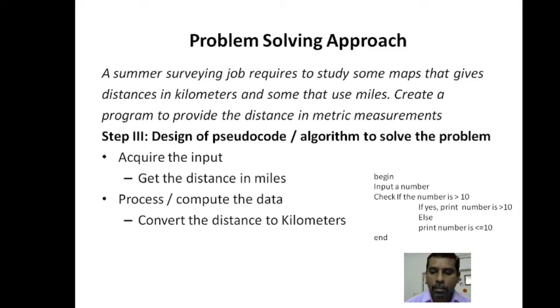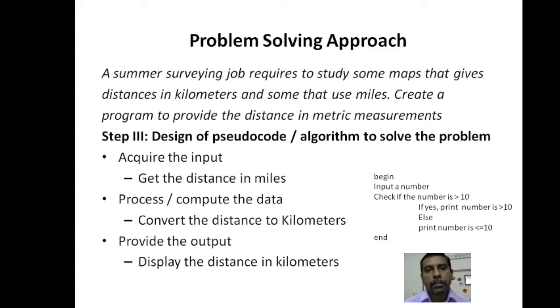So that is the second step in our algorithm. Third step, generally we say it is providing the output. And here we have to provide the output as distance in kilometers. So this explains the algorithm for this problem. Generally, algorithm involves three steps: algorithm or pseudocode for that matter involves three steps: acquire the input, process or compute the data, and then provide the output.